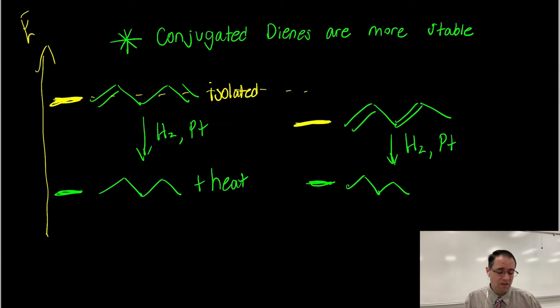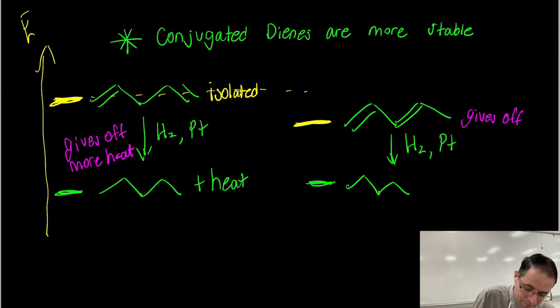And what you'll see here is from an experiment, we know that this gives off more heat compared to the conjugated diene, which gives off less heat. So again, remember, if something's more stable, it's lower in energy, so it has less energy to give off when it becomes hydrogenated.